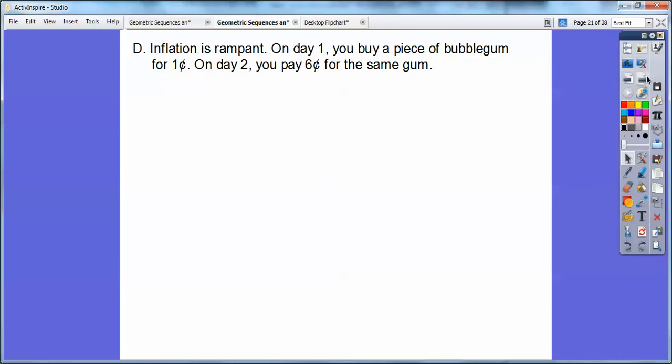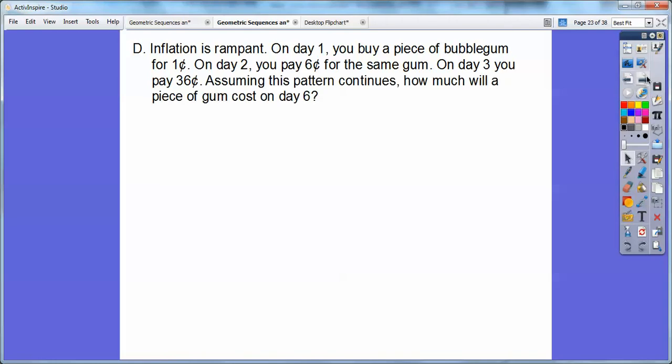All right. So here's another problem, you guys. Inflation is rampant. On day one, you buy a piece of bubble gum for one cent. On day two, you pay six cents for the same gum. On day three, you pay 36 cents. Assuming this pattern continues, how much will a piece of gum cost on day six? We've got to find out what's the pattern first. So we're going to organize this information.